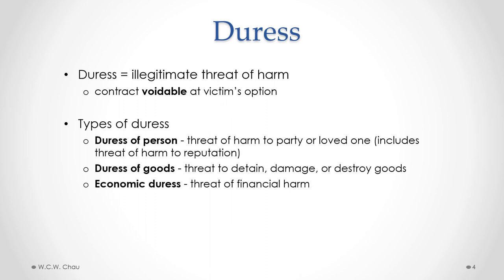There are three different types of duress. There is duress of person — that's a threat of harm to a party or a loved one, including a threat of harm to reputation. Duress of goods is a threat to detain, damage, or destroy goods. And economic duress is a threat of financial harm.